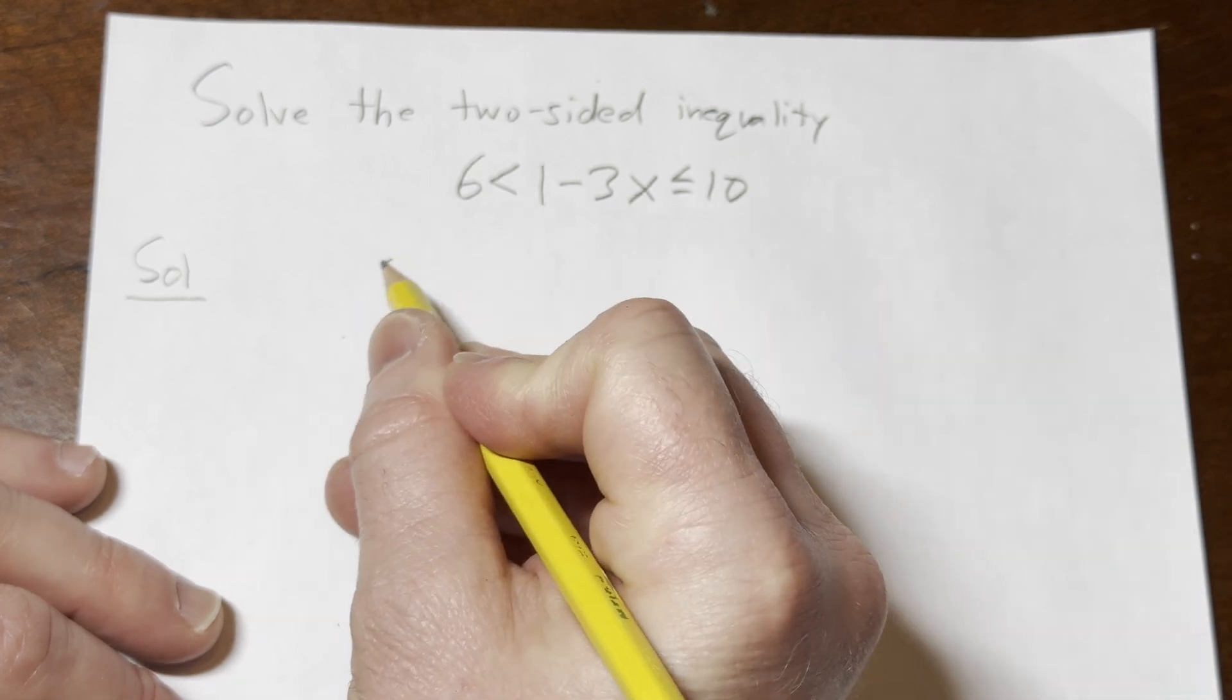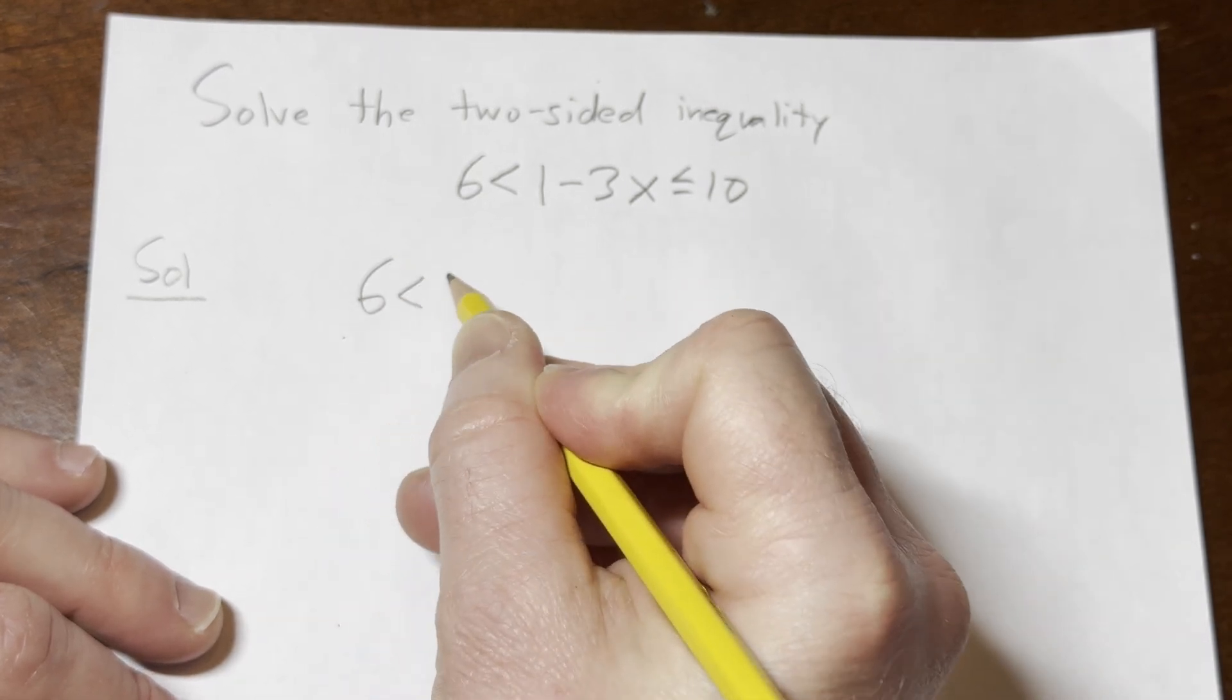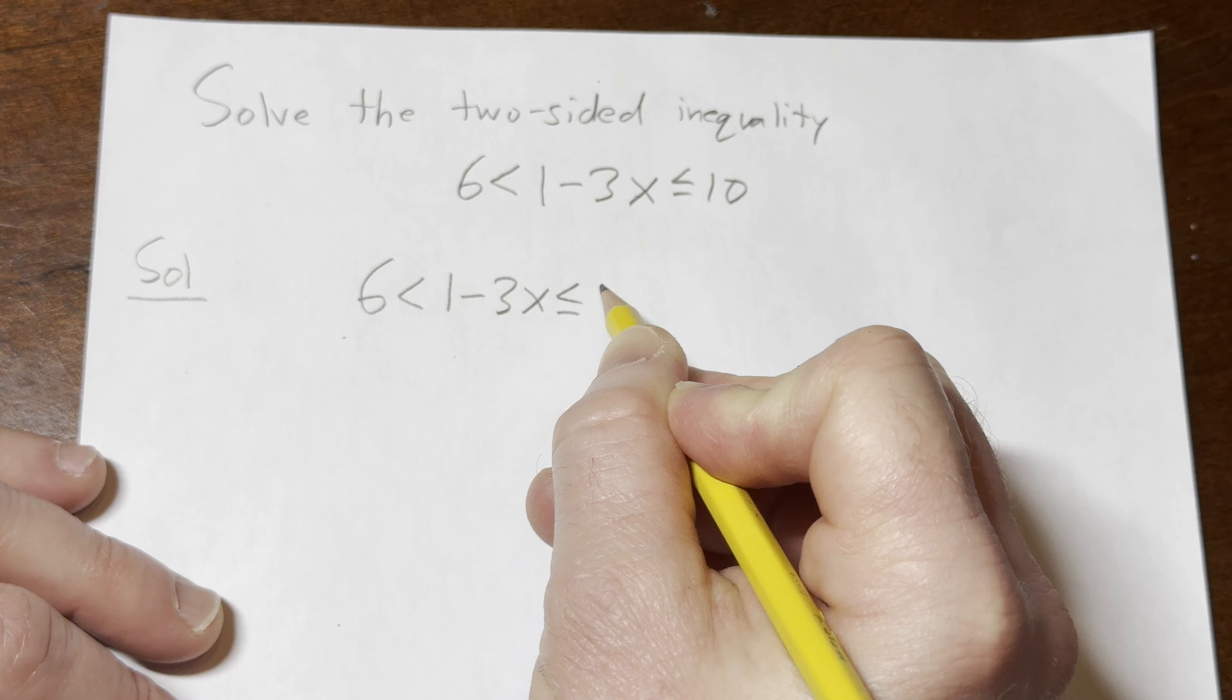I'm going to start by writing it down again. So we have 6 less than 1 minus 3x less than or equal to 10.